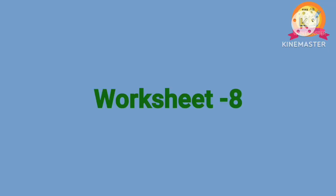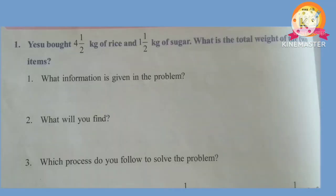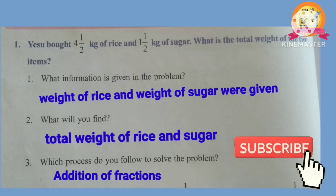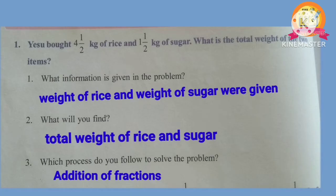Worksheet 8. First problem: Yesu bought 4 kg of rice and 1 kg of sugar. What is the total weight of the two items? Information given: weight of rice and weight of sugar. What will you find: total weight of rice and sugar. Process to follow: addition of fractions.